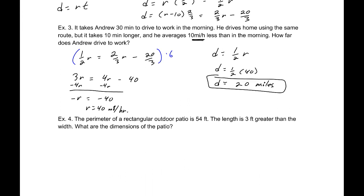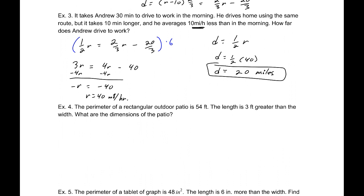Example 4, the perimeter of a rectangular outdoor patio is 54 feet. The length is 3 feet greater than the width. What are the dimensions of the patio? We need to come up with an equation that we can relate perimeter, length, and width. We have that formula, 2 times the length plus 2 times the width. That perimeter is 54. The second piece of information is that the length is 3 feet greater than the width, so L equals W plus 3.